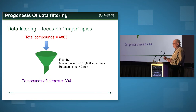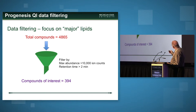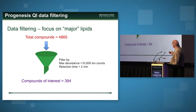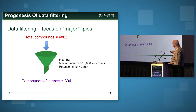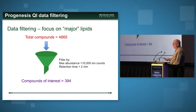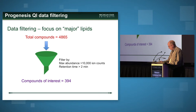When we extract this out using Progenesis, it combines those signals. In cow's milk, we saw nearly 5,000 different things annotated as compounds. We then filtered these, focusing on the major nutritional components — limiting ourselves to things with 10,000 ion counts or more and retention times greater than two minutes. That filtered out about 90% of very low-abundance lipids, allowing us to focus on about 400 compounds of particular interest.